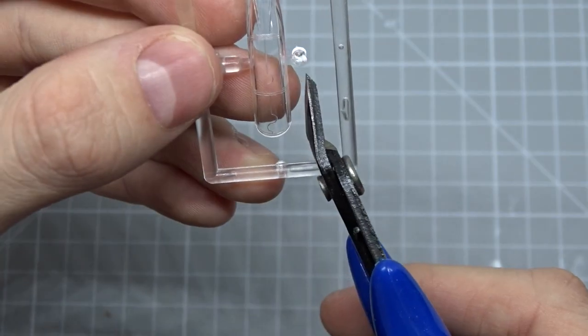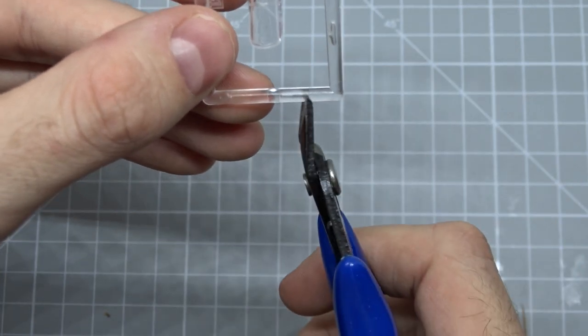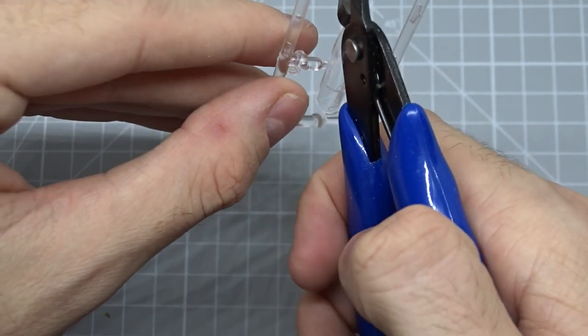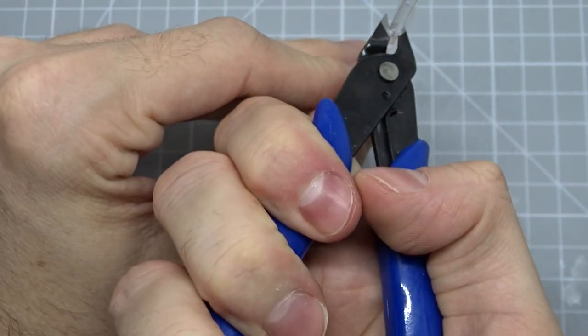Now let's remove the canopy from the sprue. To get a better angle and release some tension from the sprue I cut away some of it. Now I can do the same on the other side.